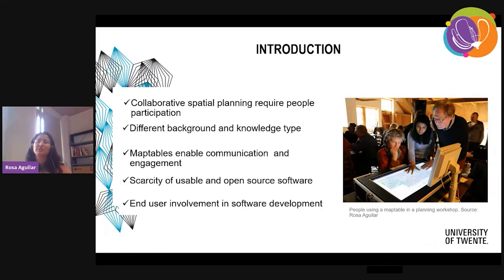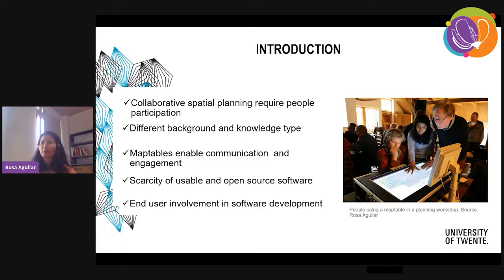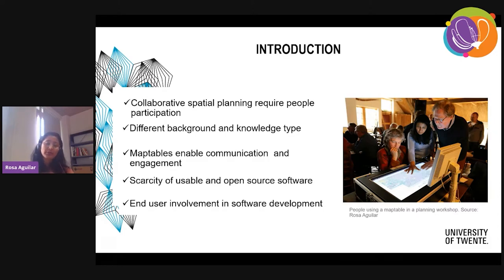What is my research about? Basically, spatial planning is related to the location of resources and facilities on the earth. These spatial planning problems require people participation — people that can have different backgrounds, different knowledge types. It's difficult to bring everyone together to discuss a problem and find a solution, or just to create awareness. Previously, planning support tools were seen as tools to find an optimal solution.